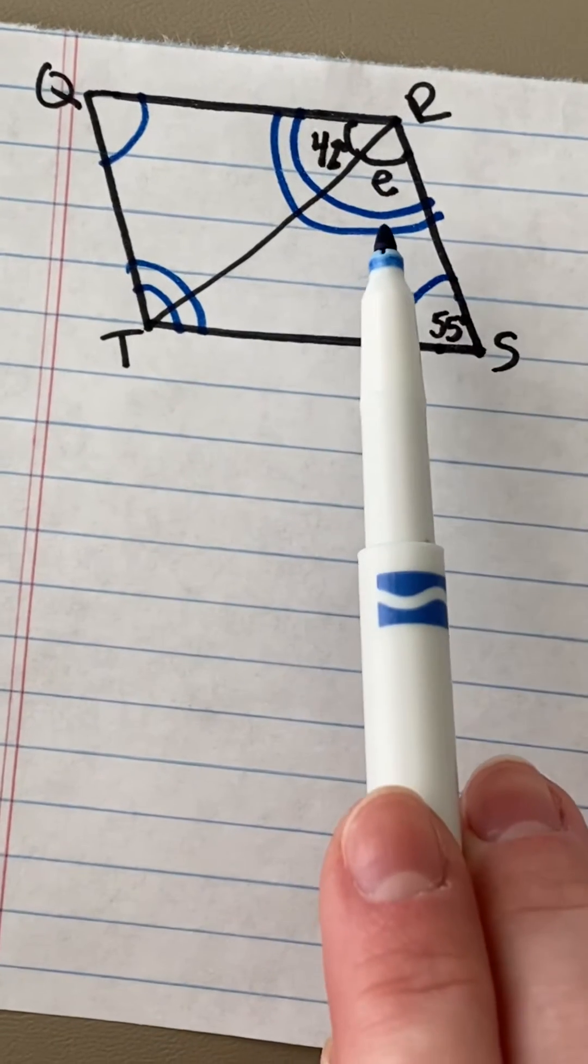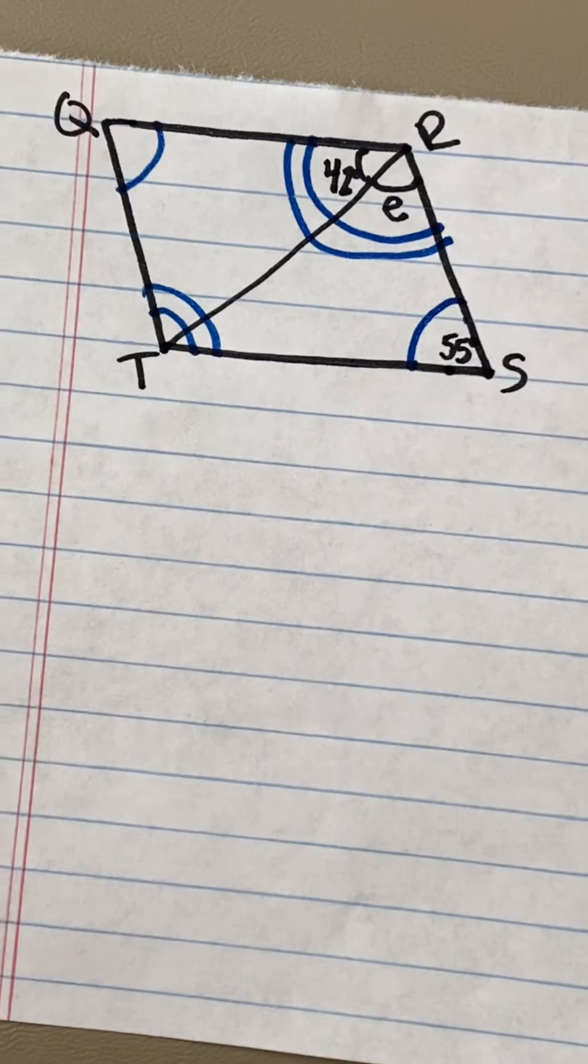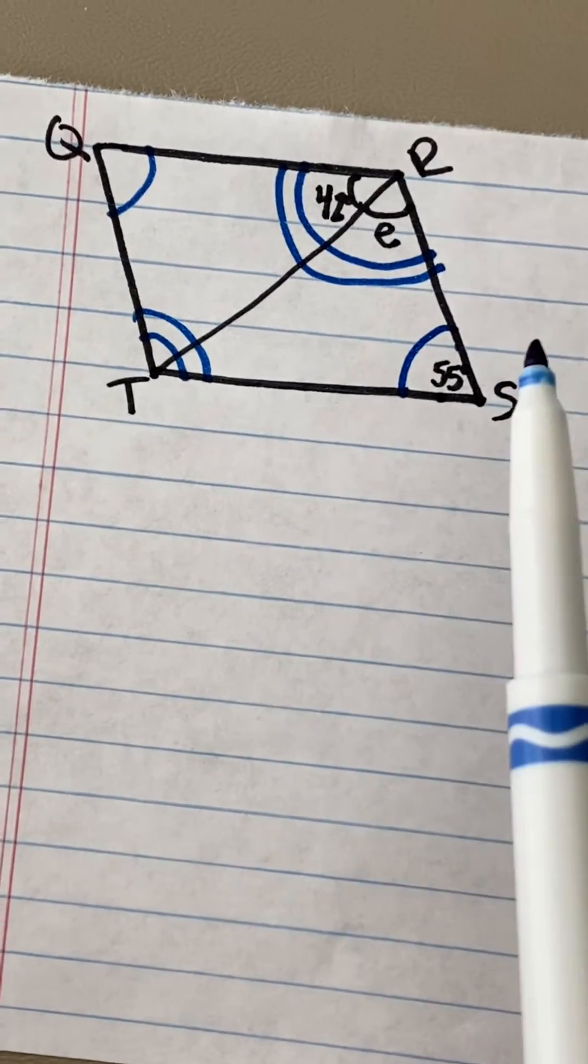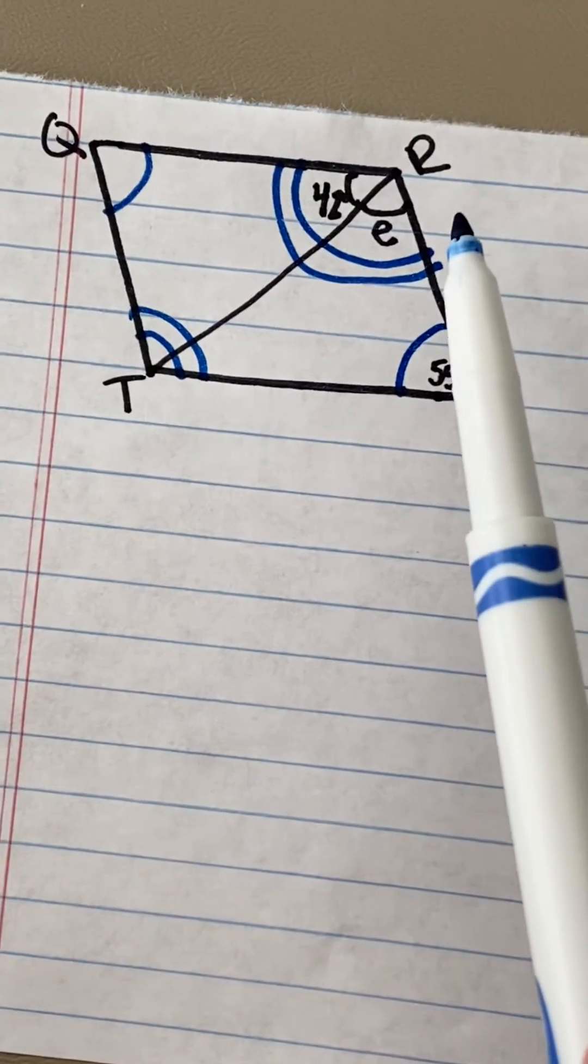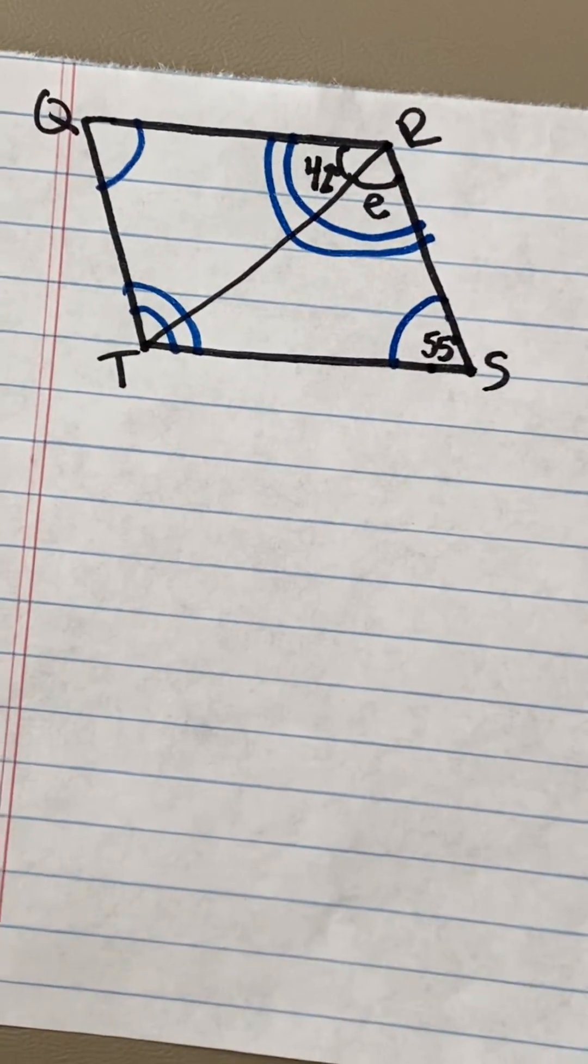For this problem, they're asking us to find the measurement of angle E. In order to do that, we are going to use the properties of parallelograms that helped us figure out that angles between parallel lines equal 180 degrees.